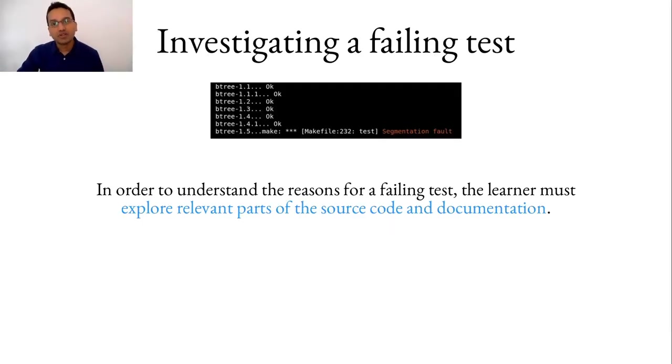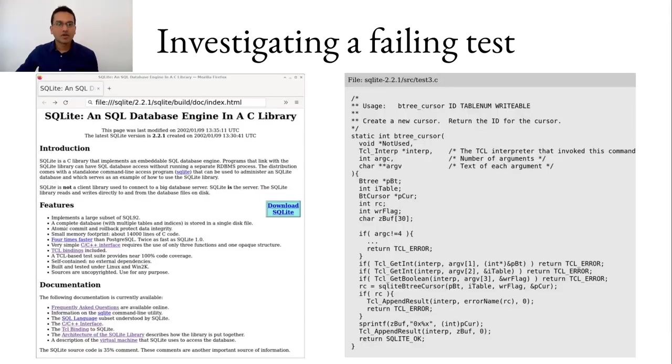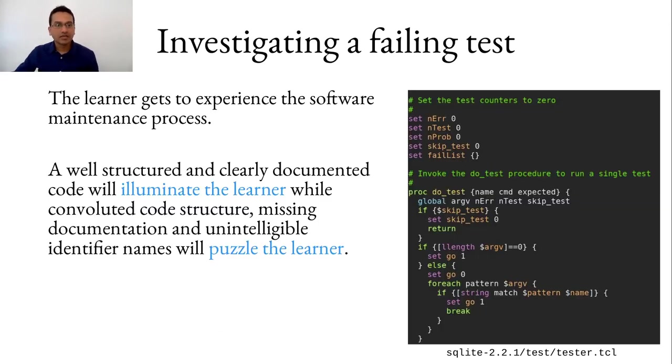Let us see an example of how a failing test contributes to learning. In order to understand the reasons for a failing test the learner must explore relevant parts of the source code as well as understand the documentation. Good documentation and well commented code helps the learner to easily pinpoint the reasons for a failing test.